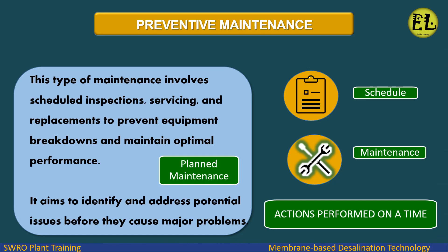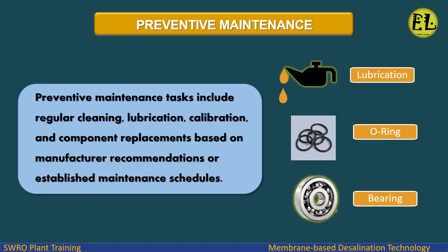Preventive Maintenance: This type of maintenance involves scheduled inspections, servicing, and replacements to prevent equipment breakdowns and maintain optimal performance. It aims to identify and address potential issues before they cause major problems. Preventive maintenance tasks include regular cleaning, lubrication, calibration, and component replacements based on manufacturer recommendations or established maintenance schedules.